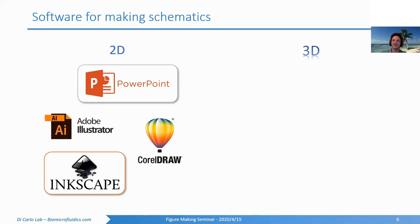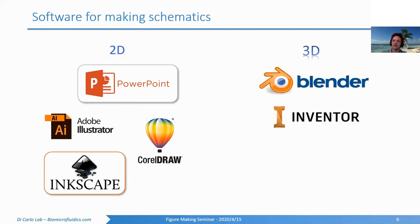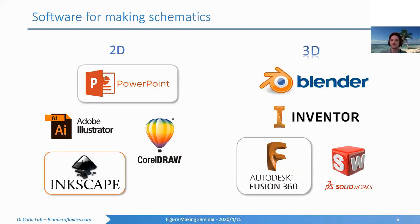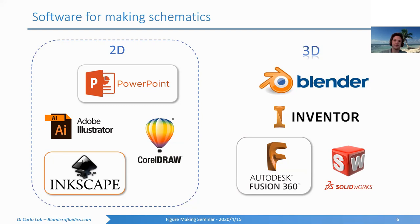In terms of 3D, I stay away from it as much as possible because it tends to take a lot of time. Blender is free software people use a lot. Autodesk has Inventor, and there's SolidWorks. Autodesk Fusion 360 is another one I like — it's free and fairly intuitive. Blender is powerful but really difficult to use. I mostly stick with 2D and avoid over-complicating things. If you can convey most of your information with a simple 2D schematic, that'll do 90% of the work.